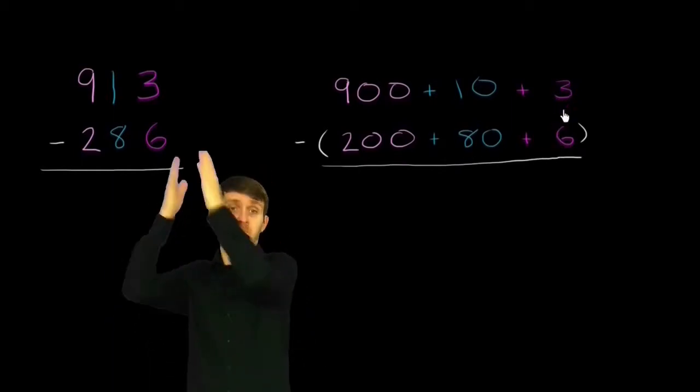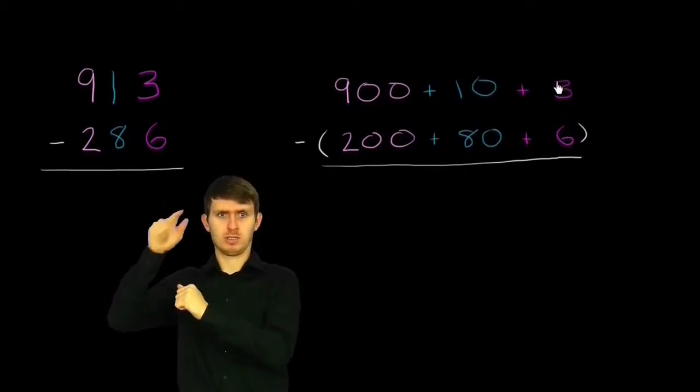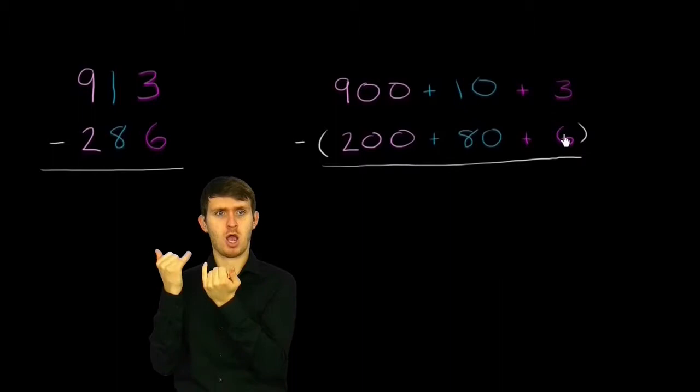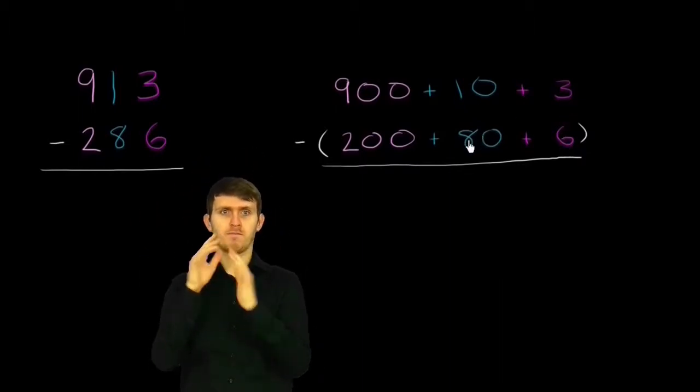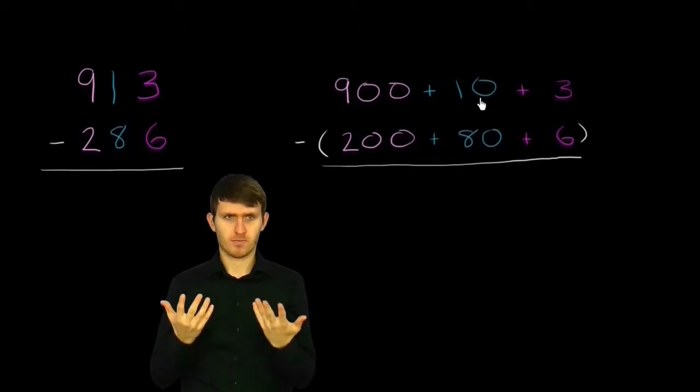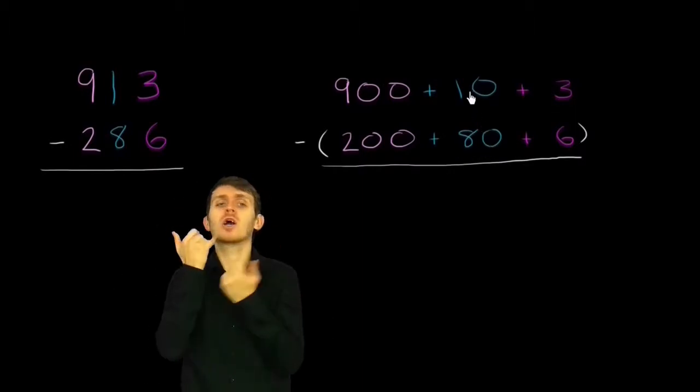So let's try to subtract going place by place. If we start in the ones place, we have a problem immediately. 3 is less than 6. How do we subtract a larger number from a smaller number? We also have a problem in the tens place. 80 is larger than 10.